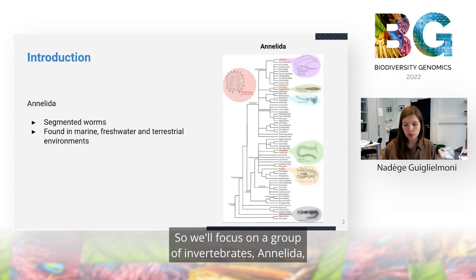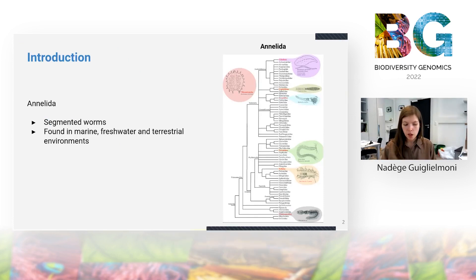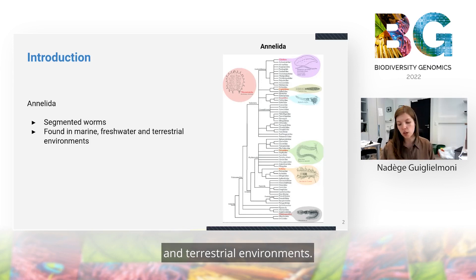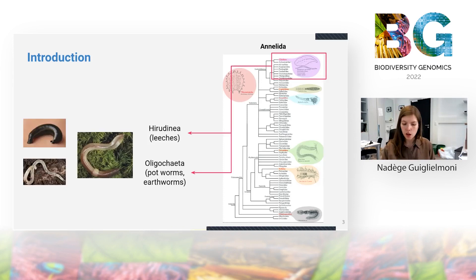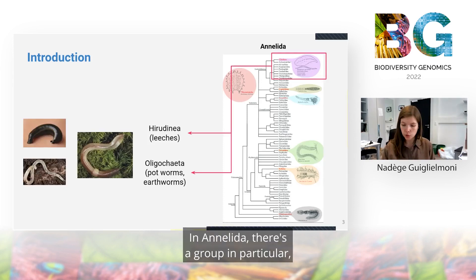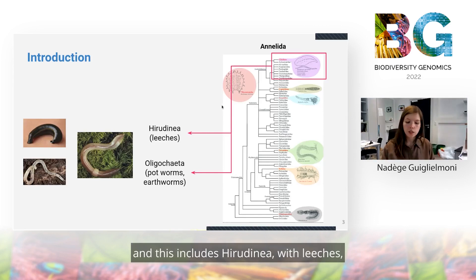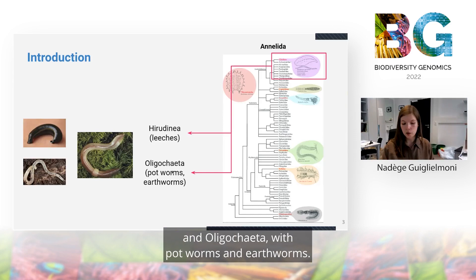We'll focus on a group of invertebrates, Annelida, which are segmented worms that live in marine, freshwater, and terrestrial environments. Within Annelida, there is a group in particular called Clitellata, which includes Hirudinea with leeches and Oligochaeta with potworms and earthworms.